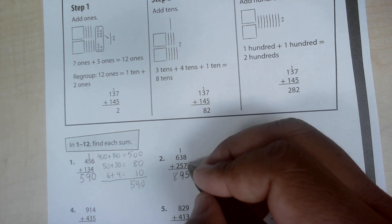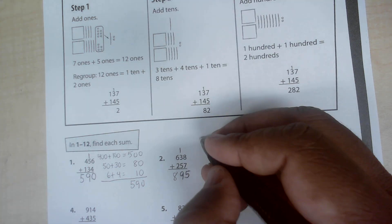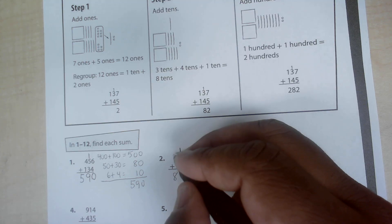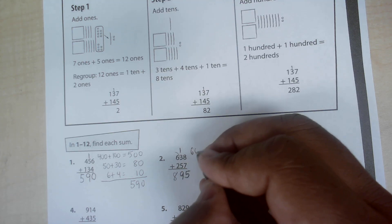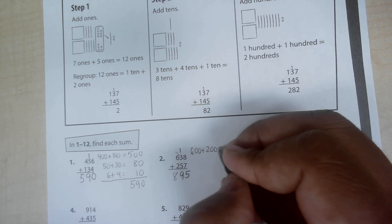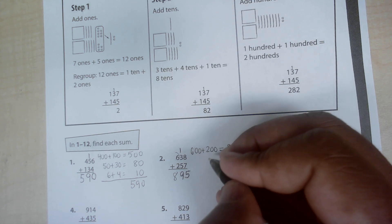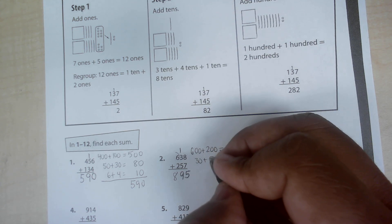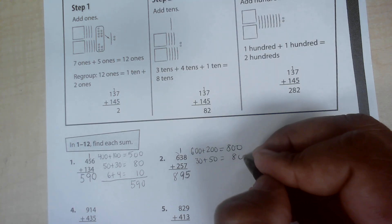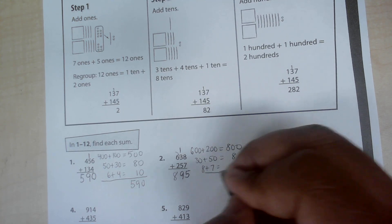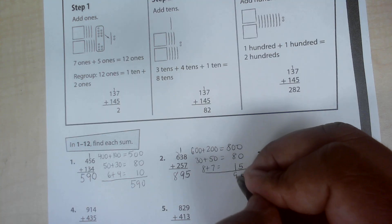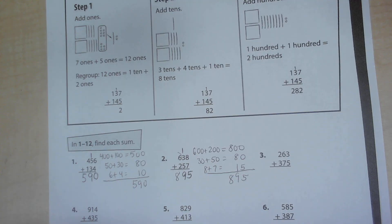I could, like I said, add it using the place value method. So 600 and 200 would be 800. 30 plus 50 is 80. And then eight plus seven is 15. If I add this up, I have 895. Same way checks out.